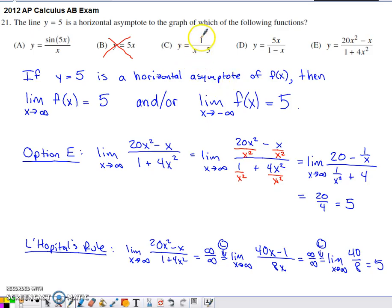This one's also pretty easy to eliminate. 1 divided by infinity is 0. This graph does have a horizontal asymptote, but it's y equals 0, not y equals 5.